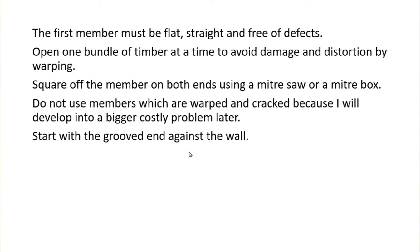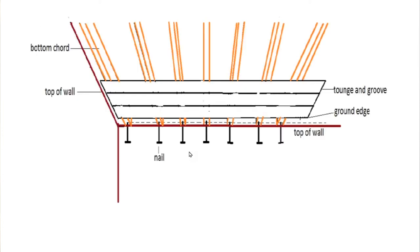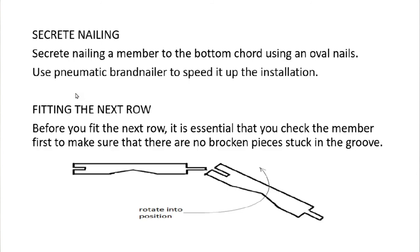Do not use members that are warped or cracked, as they will develop into a bigger, costly problem later. Start with the grooved end against the wall. Secret nailing: fix a member to the bottom cord using an oval nail. Use a pneumatic brad nailer to speed up the process. Oval nails are used because their heads do not show on the surface and are easy to drive below the wood surface.